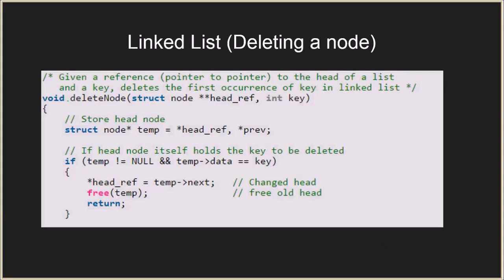We have a function deleteNode with two arguments: a pointer to the head reference, and the key to be searched and deleted. First, we store the head node in a pointer called temp, which we use to traverse the linked list. We also have a pointer called previous, which keeps track of the previous node, since we will need to update its next pointer. Temp will ultimately point to the node to be deleted.